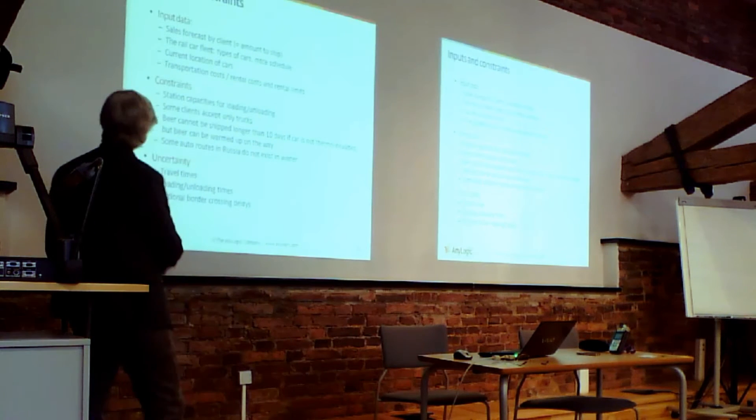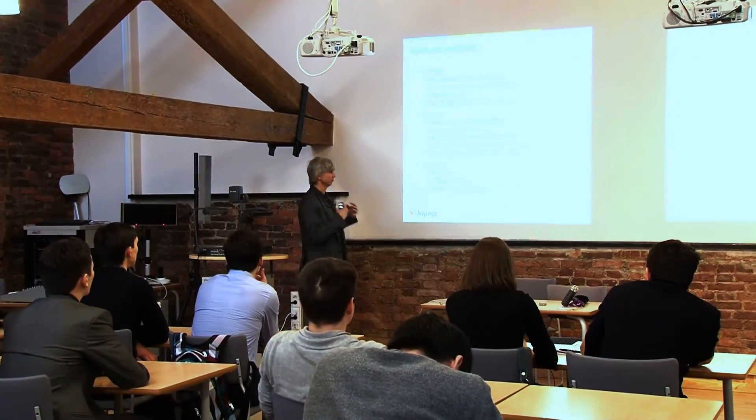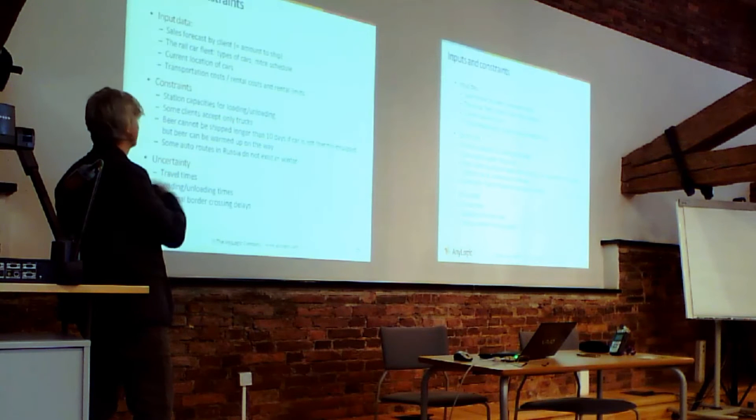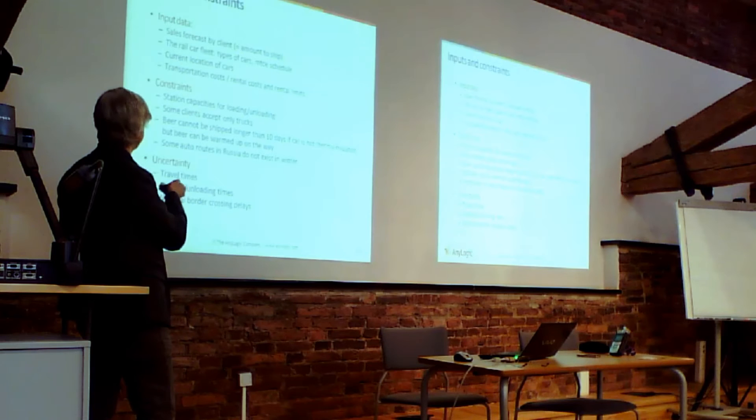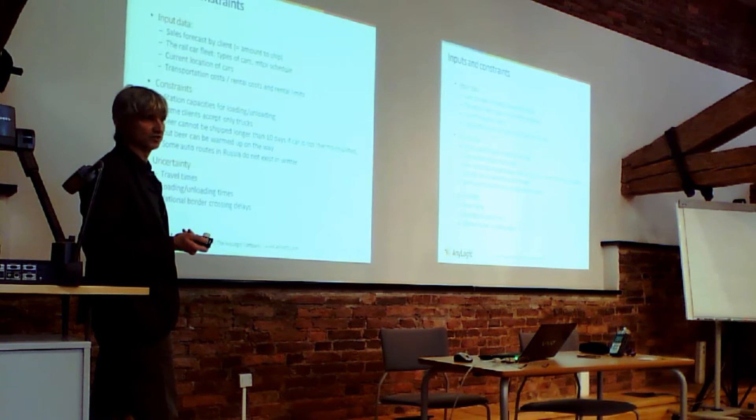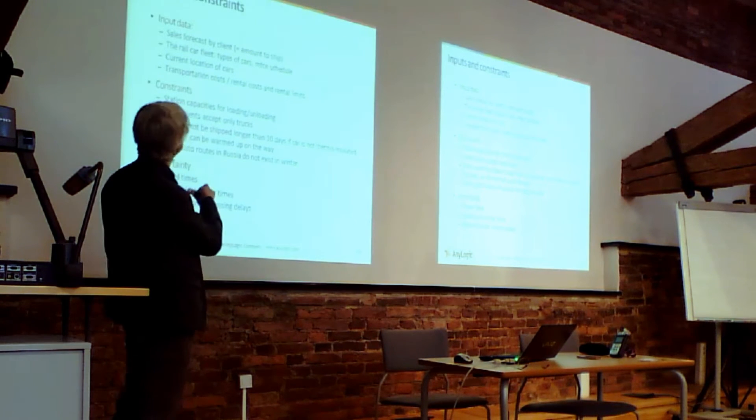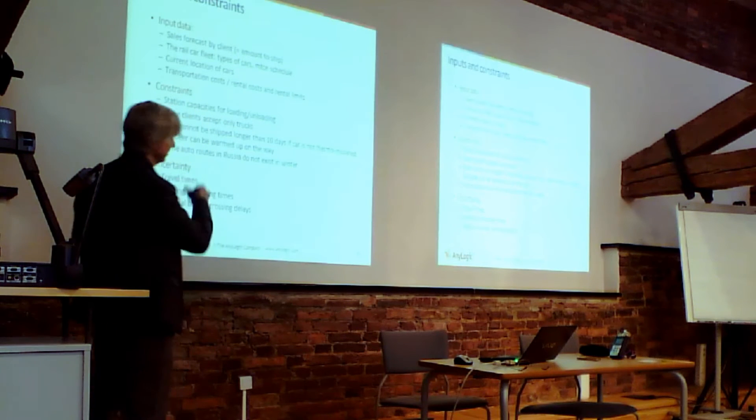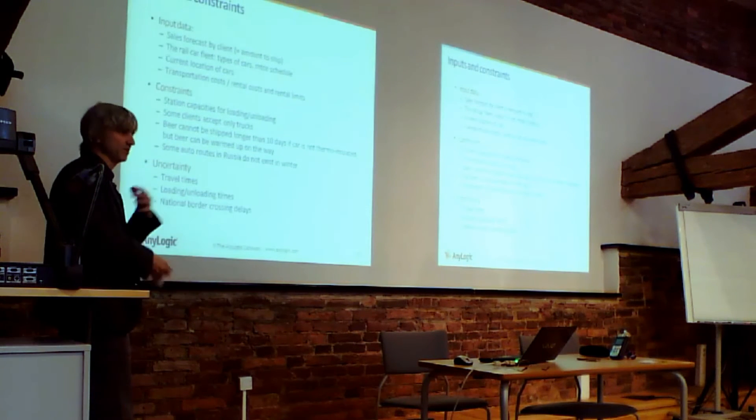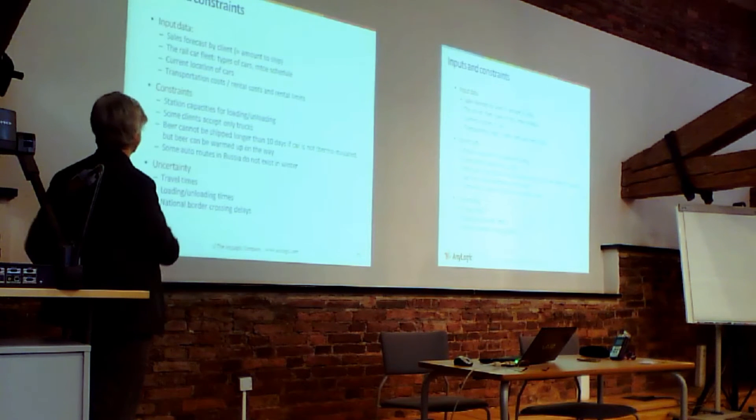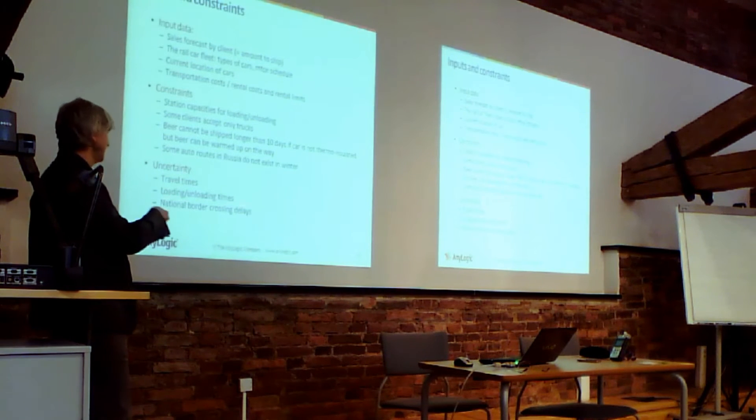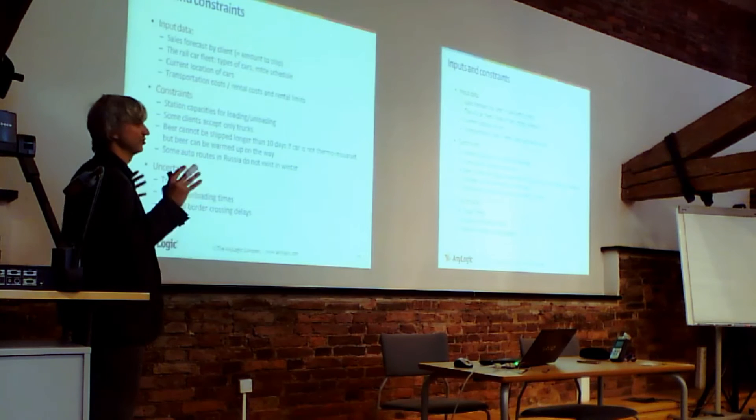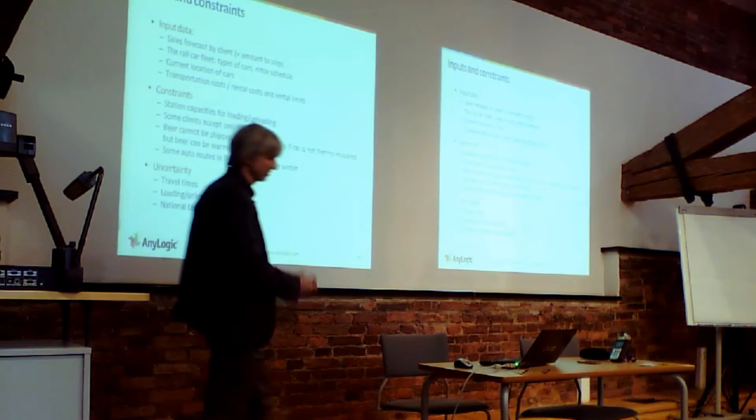So input data: how much beer to ship and deliver. Constraints: storage capacities. Some clients only accept trucks and don't have rail. Some technology constraints. Beer cannot be shipped for longer than 10 days, but if you have thermo-insulated car, it's longer in the winter time, of course. Beer can be warmed up on the way, then it can ship longer, but then it costs more. A lot of uncertainty: travel times, loading, unloading, and if the logistics includes crossing national border, there's huge uncertainty associated with the fact that the rail car crosses the border.